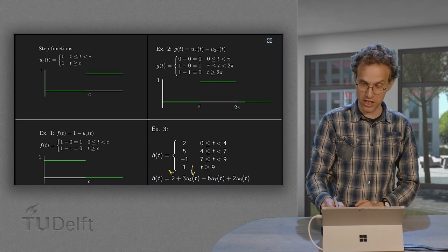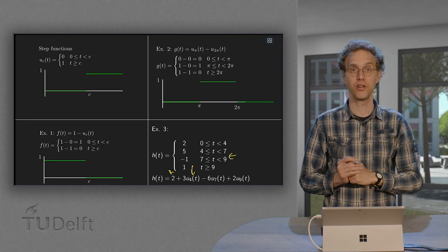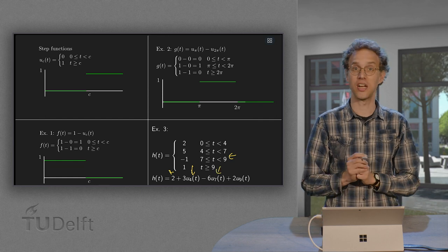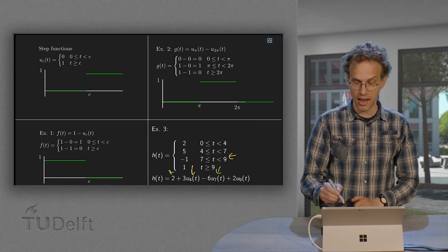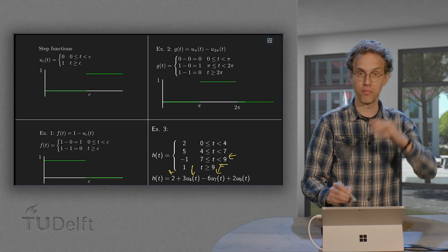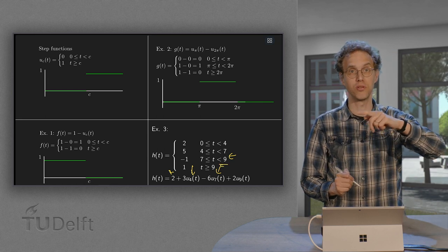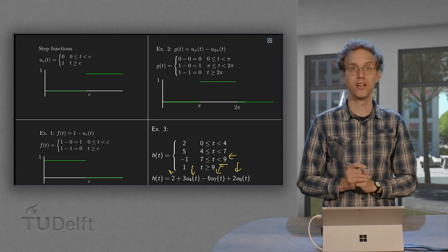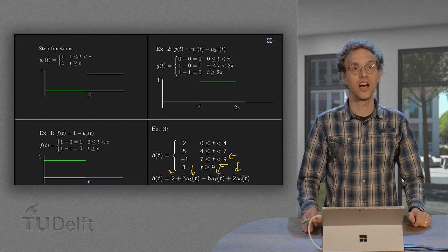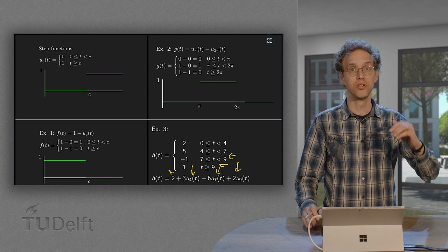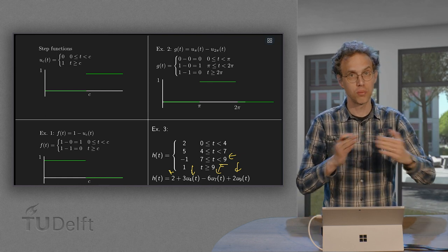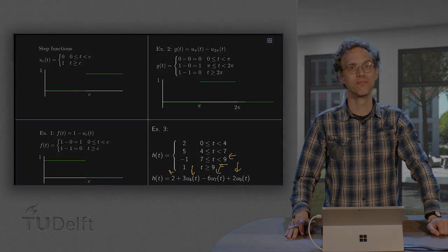Then if you are at 7, we have to jump from 5 to minus 1. So we have to jump 6 steps down. So we do a minus 6 times u 7. And then at t equals 9, we go from minus 1 to 1. So we have to jump up 2 steps. So we do plus 2 times u 9 of t. So this is how we can use step functions to jump from one value to another by taking some combinations. So I'll see you on the next one.